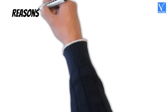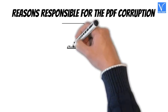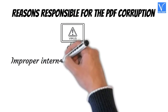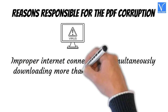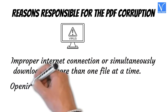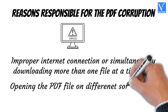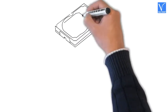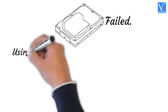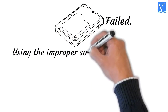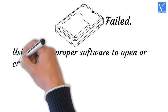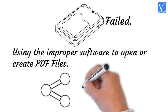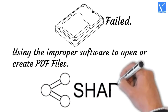Reasons responsible for PDF corruption are: if the device is infected with a virus or any other malware; improper internet connection or simultaneously downloading more than one file at a time; opening the PDF file on different softwares; PDF files can also be damaged when there is an error in the hard disk or if it failed. PDF files may also be corrupted by using improper software to open or create them. Sometimes sharing files through emails or transferring from one device to another also affects the file.